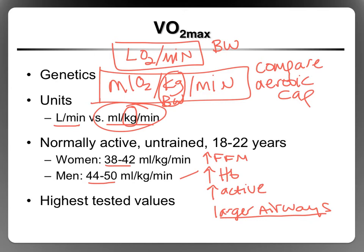Looking at highest tested values, we've seen some extraordinary numbers. For males, there are reported values in the high 90s. For females, reported values in the high 70s. Many times these are cross-country skiers, cyclists, marathoners — elite-level endurance athletes.